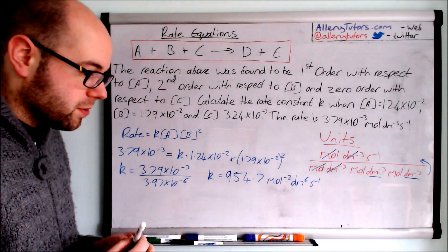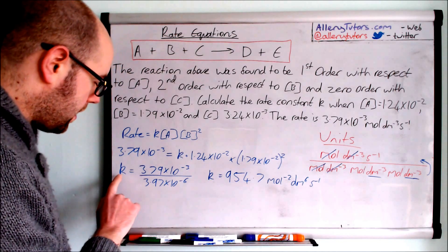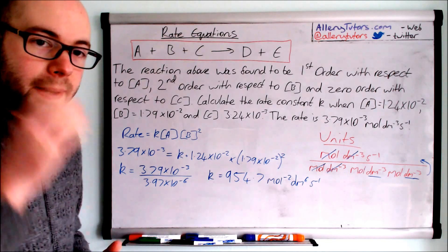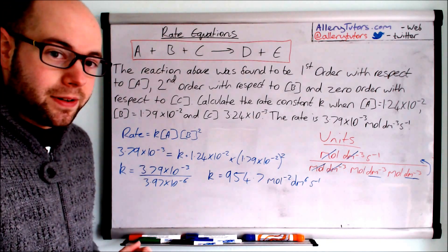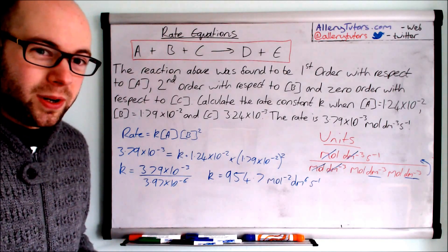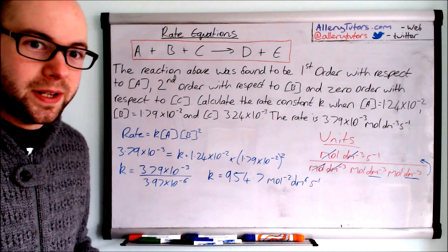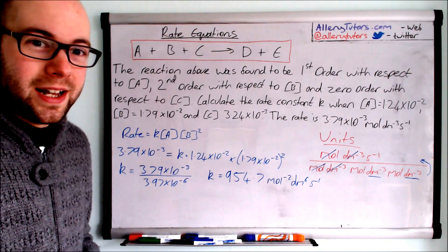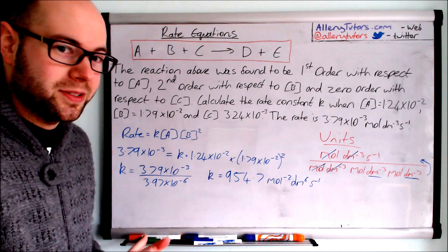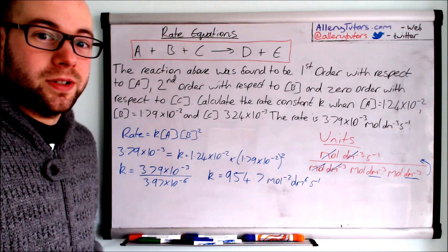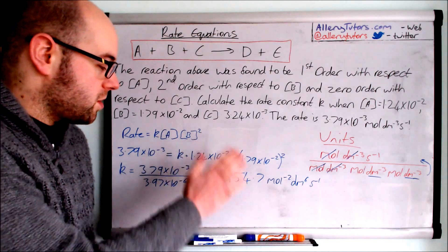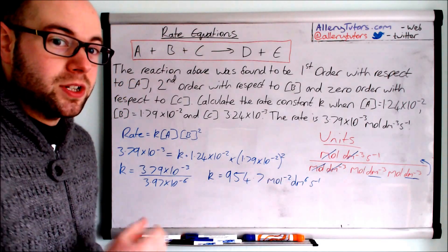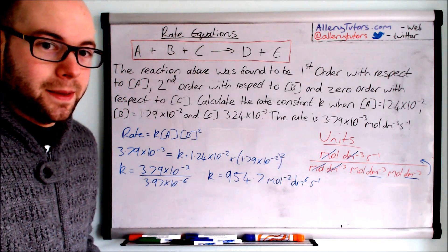It's also important to note that this value of k is unique to this particular experiment. k is affected by temperature, so the value depends on the temperature at which the experiment was carried out. We call it a constant, but it does change with temperature — be aware of that as it can come up in exams. Make sure you get your orders correct, rearrange properly, and don't be alarmed if k has no units — sometimes everything cancels out.